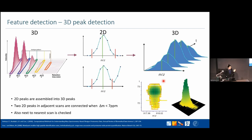The 3D feature shape is not a perfect rectangle but has an irregular outline — which is actually advantageous because it is more accurate. This precision allows MaxQuant to distinguish between two 3D features that are very close to each other. The centroids in the middle of the feature show a slight wiggle, which is normal measurement variation.